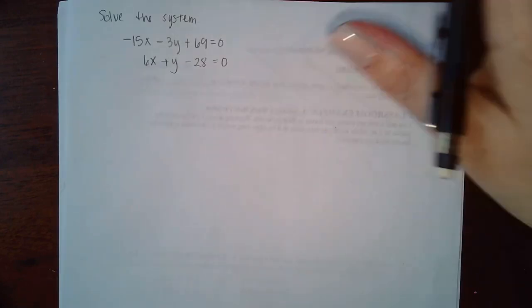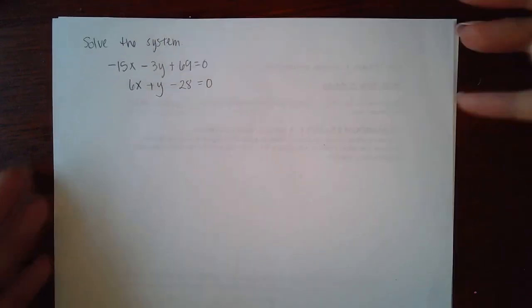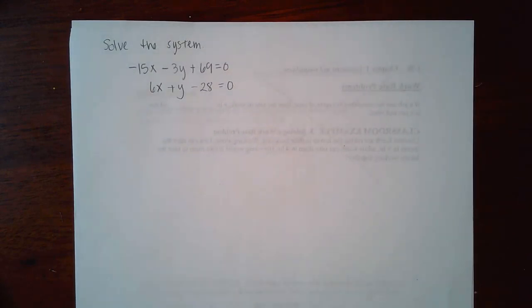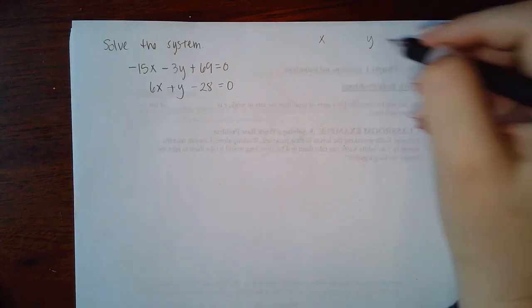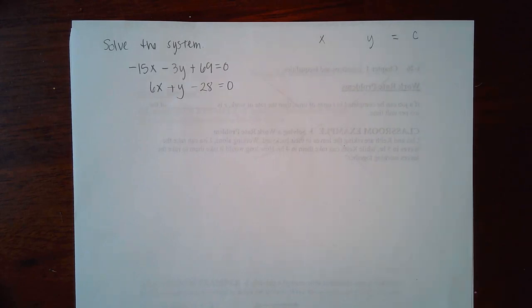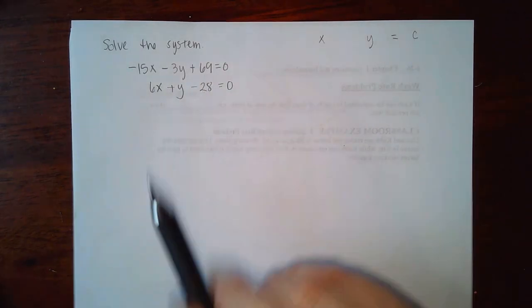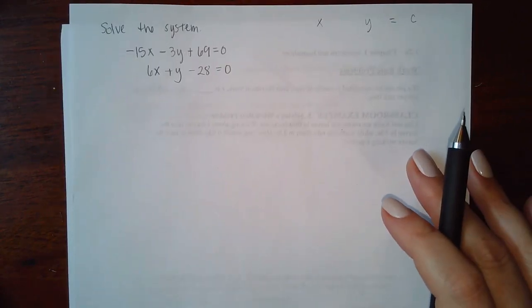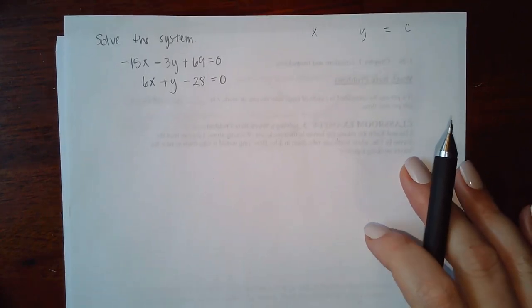Now we're going to solve another example. This one is interesting because it is not ready for the augmented matrix. Remember, in the augmented matrix you need the x's, the y's, the equal sign, and then the constants — but on the left-hand side there are constants, so you have to move those before you can continue.